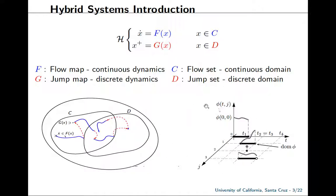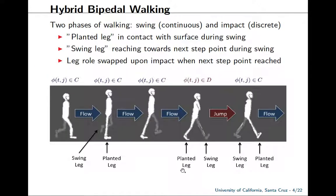Over here on the right, we can see a solution to a hybrid system, or the domain of a solution phi, which is parameterized by T — a real number representing the amount of time elapsed — and J, an integer denoting the number of jumps that have occurred. We use this hybrid notion to describe bipedal walking as two phases: a swing phase and an impact phase. During the swing phase, one leg is planted and the other is swinging toward the next stepping point. At impact, the legs switch roles and we move on to the next step.